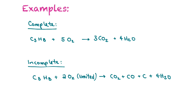Here's an example of complete combustion: propane C3H8 plus 5 oxygen makes 3 carbon dioxide and 4 water molecules — sufficient oxygen to react all the propane. In the next example, propane has a limited oxygen source — only two oxygens per propane molecule — so we end up with some carbon dioxide, some carbon monoxide, some carbon soot, and water. This is not what we want when burning hydrocarbons as fuel.